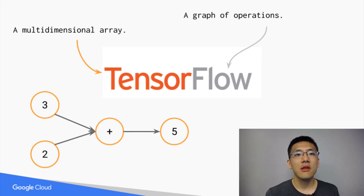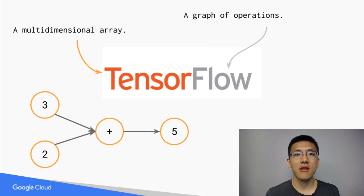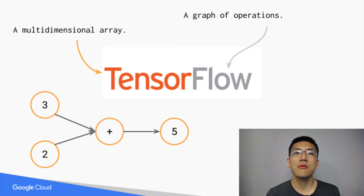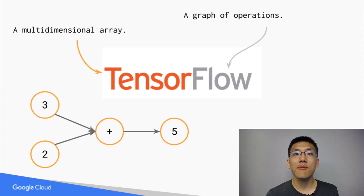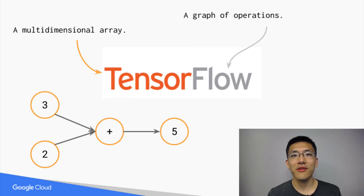For example, let's see some tensors here flowing along a graph, with the two and the three flowing into an addition operator and outputting a five. This example may be simple, but it illustrates an important concept in TensorFlow, and that is the deferred execution model. This means that the graph has to be constructed before any inputs are fed into it. We'll see some more examples of this later in the code.